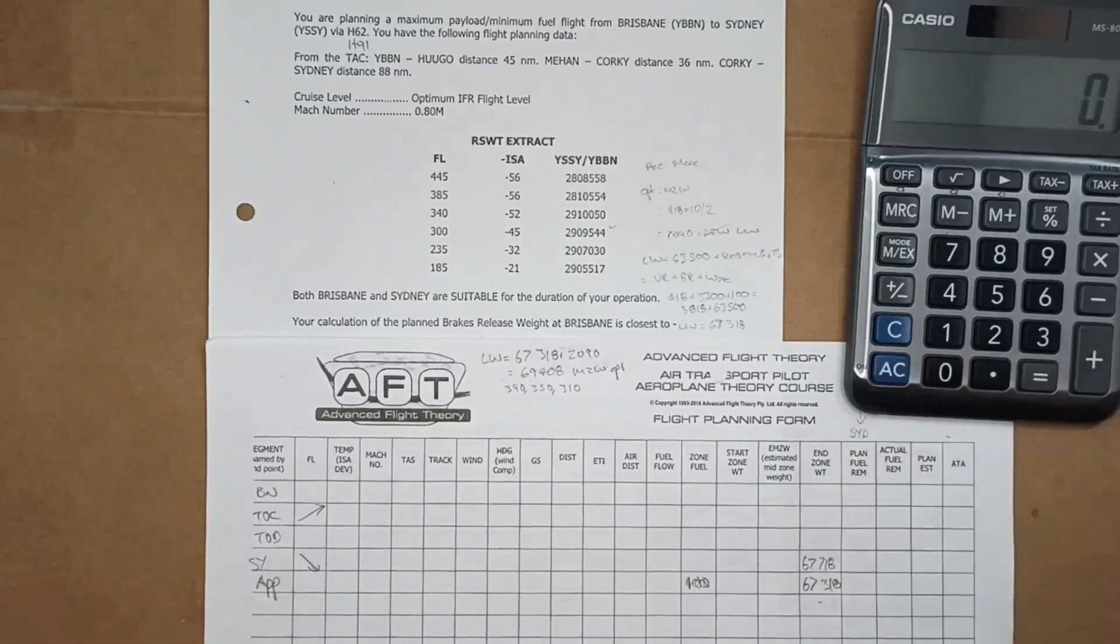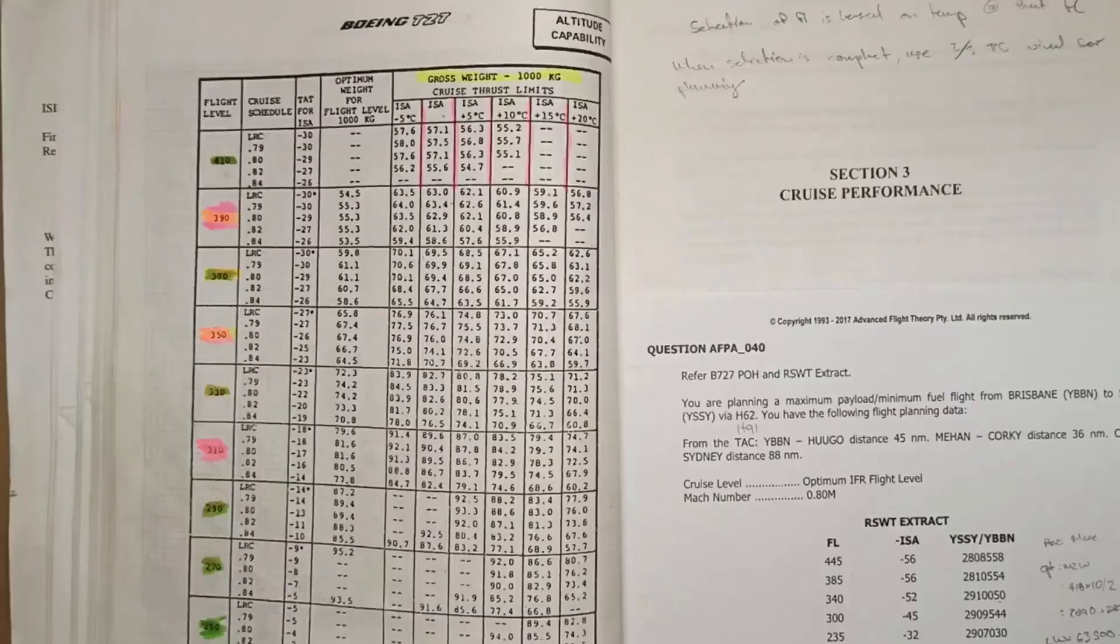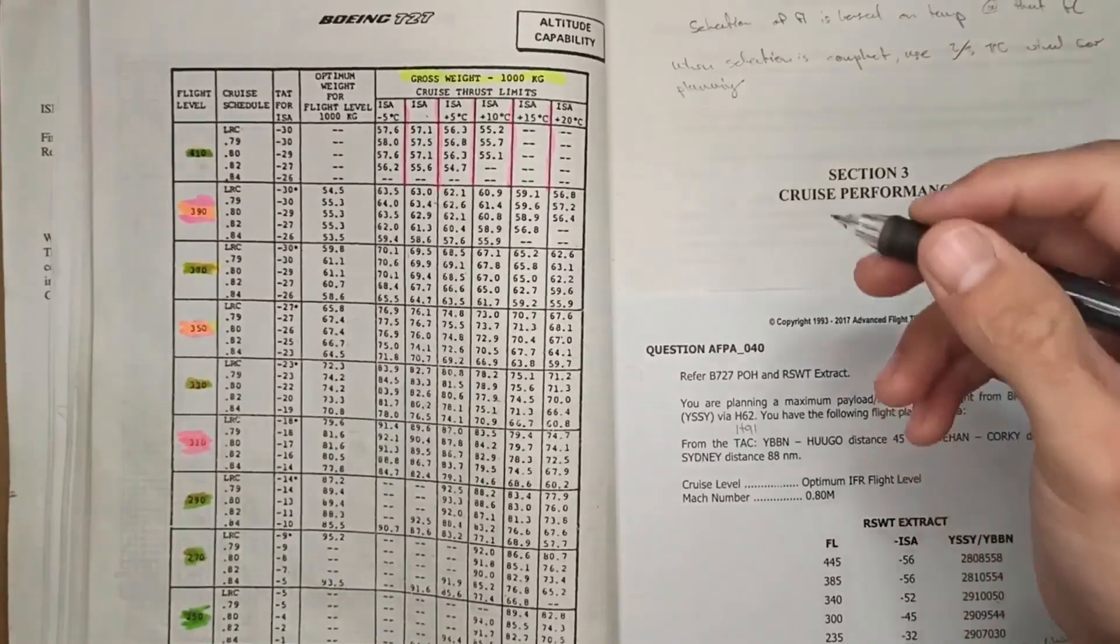So then we just work backwards from here. We've got to find out the flight level, so I'm on the altitude capability chart 2-14.